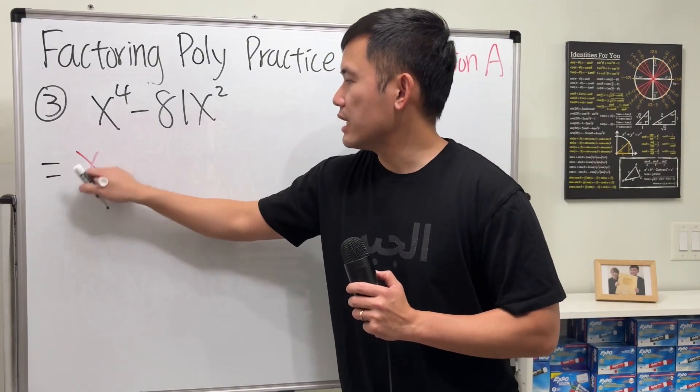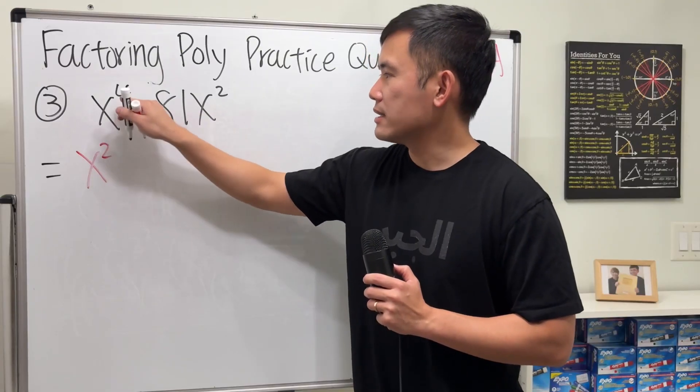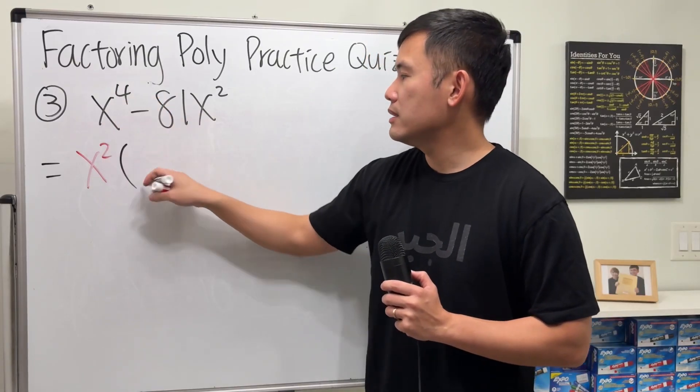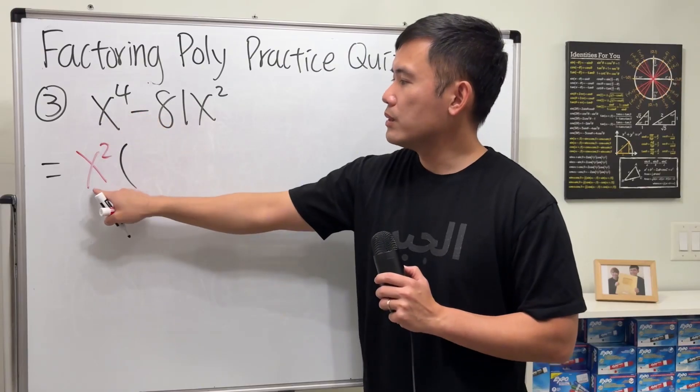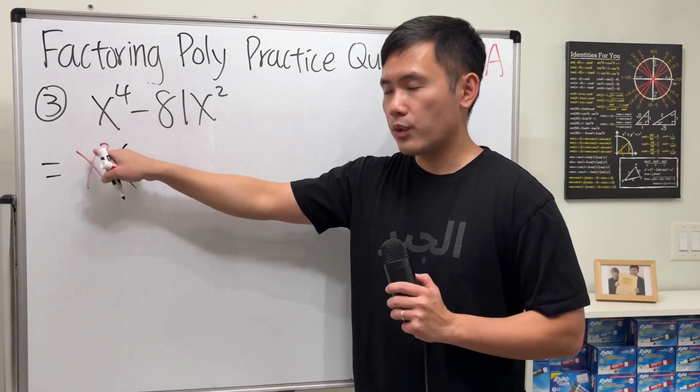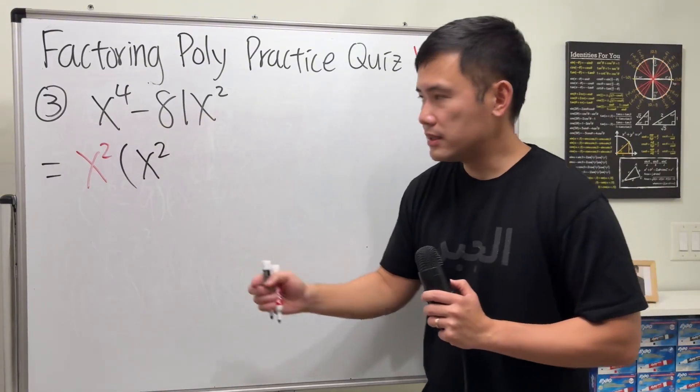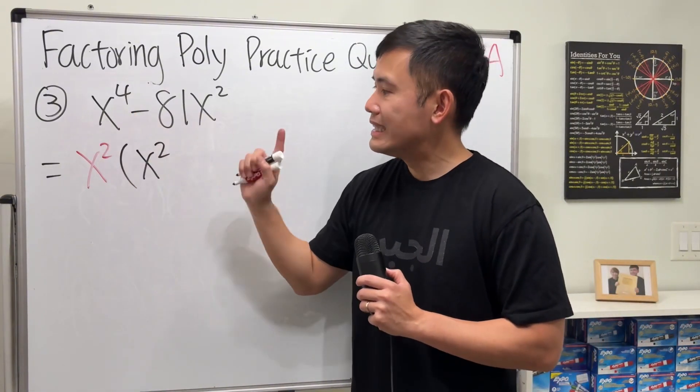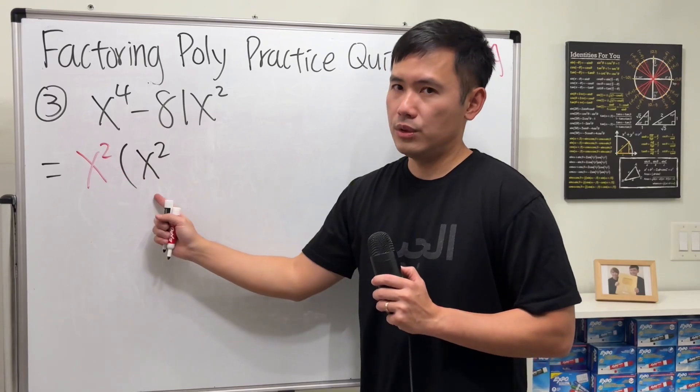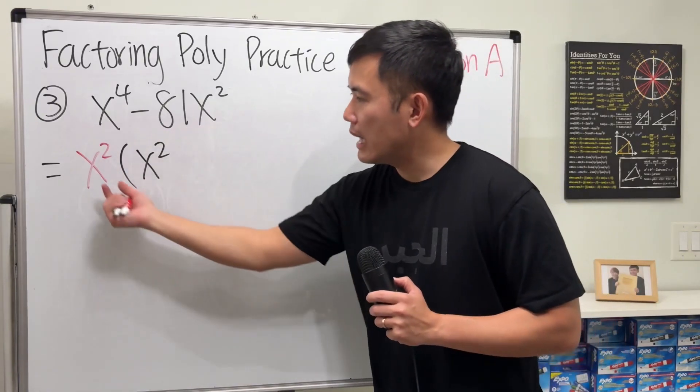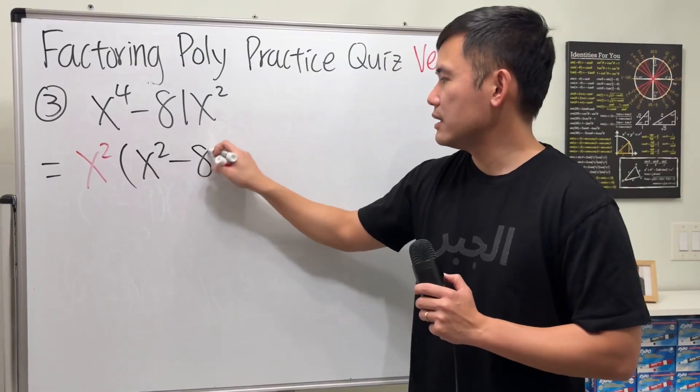That is, we can first take out x squared, because this has x to the fourth power, right? So, when we take this, we took out two of the x's, right, x squared, so we will have x squared left. You can also think about this as x to the fourth power divided by x squared, and we still get x squared. This right here, we took that out already, so we have minus 81.